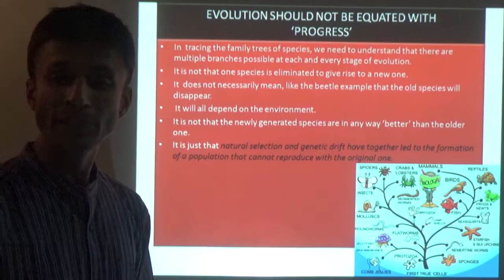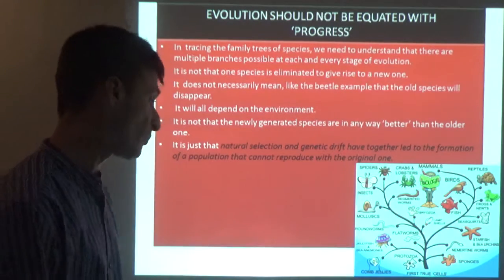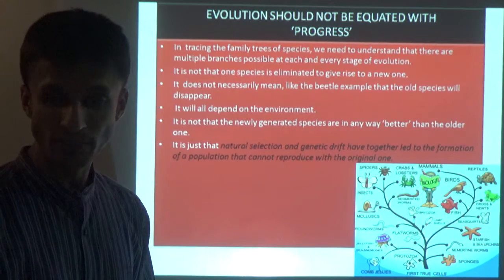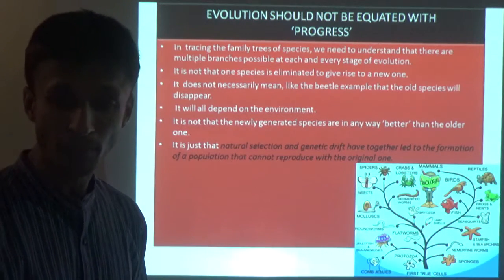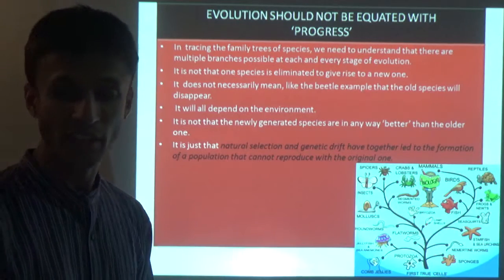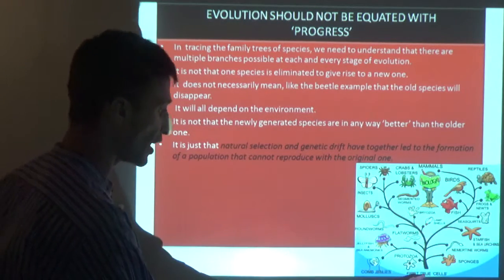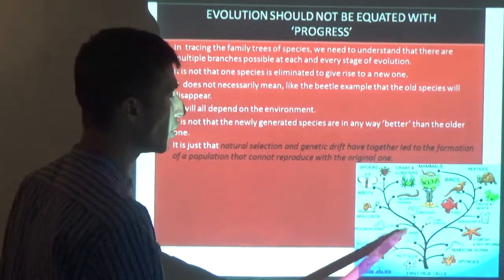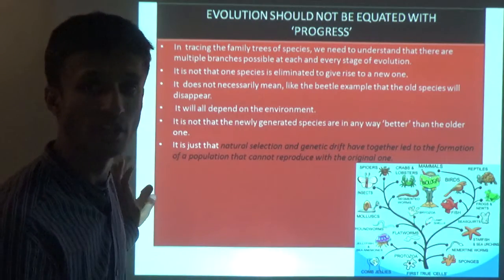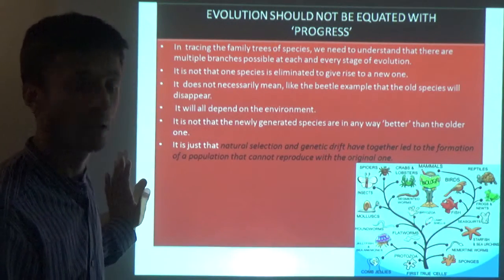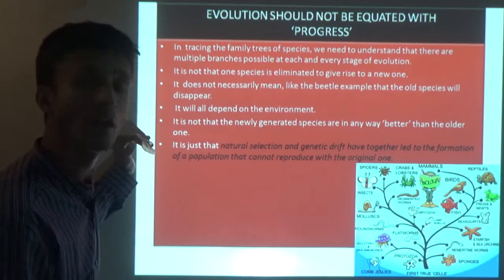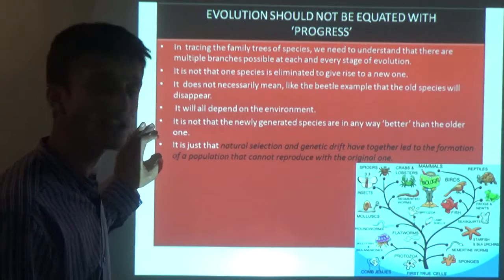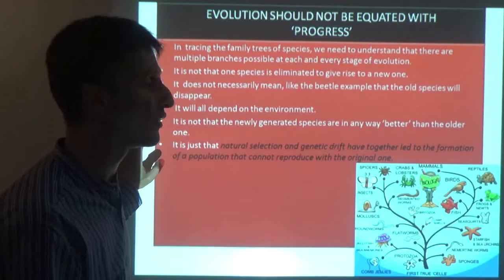Evolution should not be equated with progress. This is a very important concept - we need to understand the family trees of species. There are multiple branches possible at each and every stage of evolution. At every stage of evolution there are multiple branches, and any result can come from them. It is just natural selection and genetic drift - it is not that any new species has to be better.